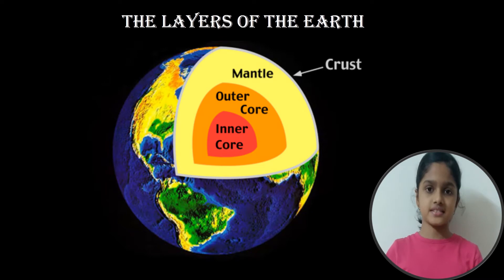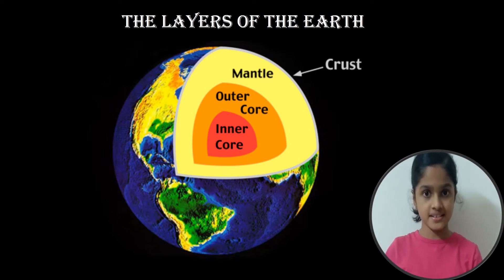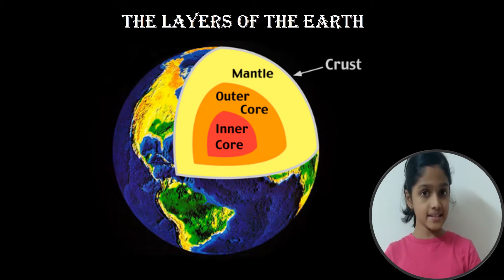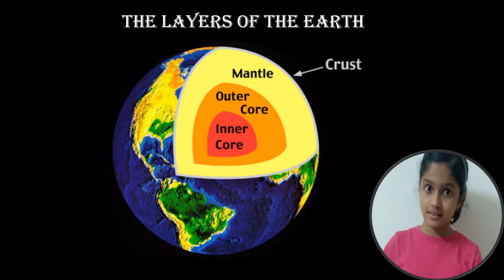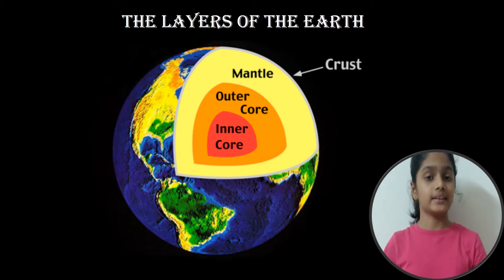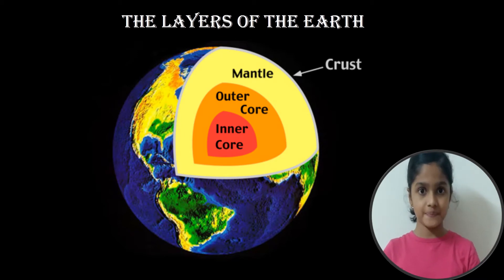Starting at the center, the earth is composed of four distinct layers. They are the crust, the mantle, the inner core and the outer core.